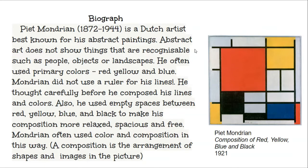Also, he used empty spaces between red, yellow, blue, and black to make his composition more relaxed, spacious, and free. Mondrian often used color and composition in this way. Composition is the arrangement of shapes and images in the picture.